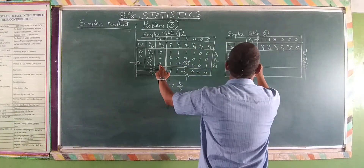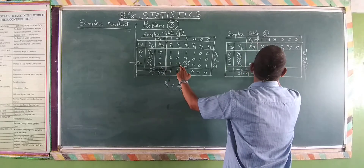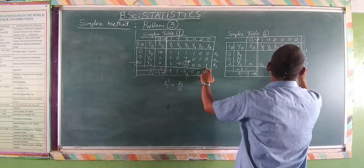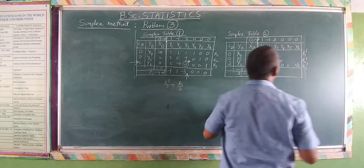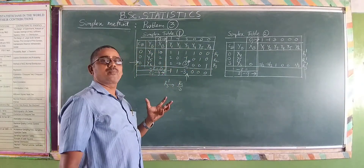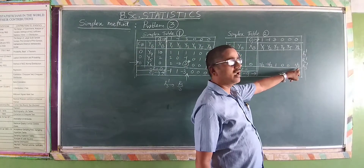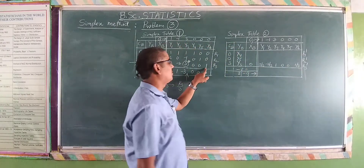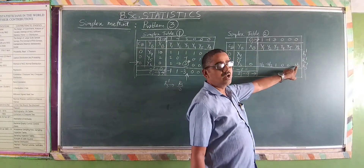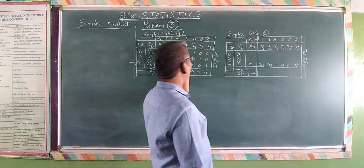Computing r3 dash = r3 / 3: 0 divided by 3 is 0; minus 2 divided by 3 is minus 2 by 3; then 1, 0, 0, and 1 by 3. You can observe that wherever y6 leaves the basis, the values are changing — 1 by 3 here. At the basis we get the unit matrix: 0, 0, 1.